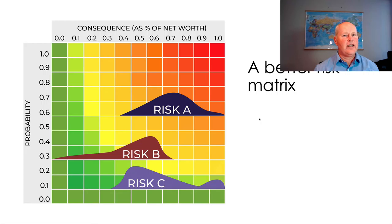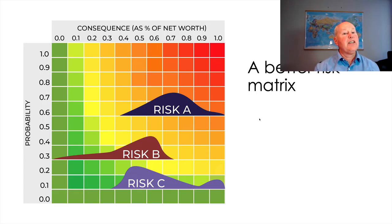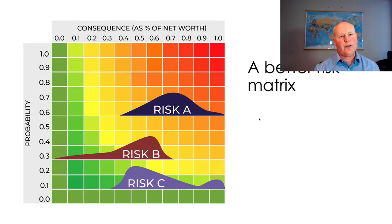There are better ways to use risk matrices. In this example, I've used a zero-to-one probability scale and a zero-to-one consequence scale where one equals the net worth of the organisation — whatever you consider to be the existential threat or limit. If you lost one times your net worth, would that make your organisation fail? In this model, 100% of net worth is a catastrophic loss. For Risk B, it might be 30% likely the risk will actually occur. Then if it does happen, there's a range of consequences — almost certain it won't cost more than 75% of net worth at worst, most likely between 40% and 70%. You could do this model with lives, reputations, or any number of things. I think this is a better way to use a risk matrix.